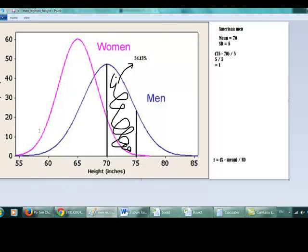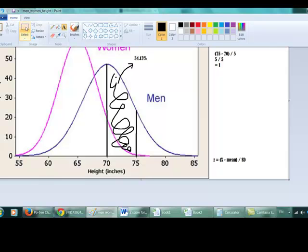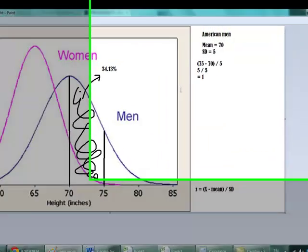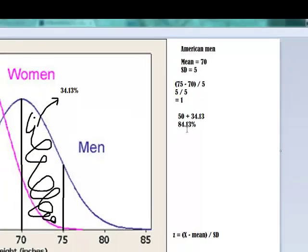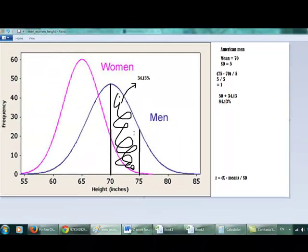This must be 50% because it's below the mean. So all we need to do is this: 50 plus 34.13 is 84.13%. That means 84.13% of men are shorter than 75 inches.